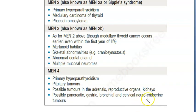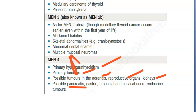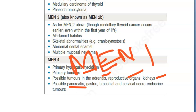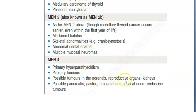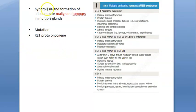Now let's go to MEN 4. MEN 4 again has hyperparathyroidism - note that MEN 3 had missed this, but it's back. Pituitary is back again. Possible tumors of the adrenal, kidney, reproductive organs, and pancreas. This is very similar to MEN 1, which also had hyperparathyroidism, pituitary, and pancreas. Apart from that, MEN 4 has issues with adrenal, reproductive organs, kidney, bronchial, and cervical neuroendocrine tumors.